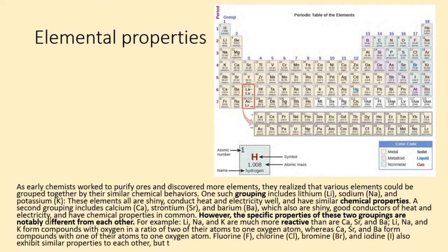Lithium, sodium, and potassium form compounds with oxygen in a ratio of two of their atoms to one oxygen atom, whereas calcium, strontium, and barium form compounds with one of their atoms to one oxygen atom. Fluorine (F), chlorine (Cl), bromine (Br), and iodine (I) also exhibit similar properties to each other, but these properties are drastically different from those of any of the elements above.